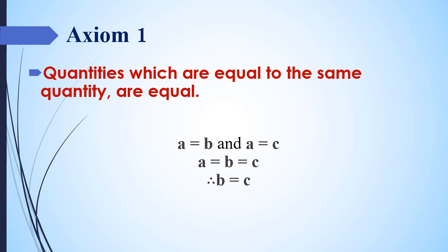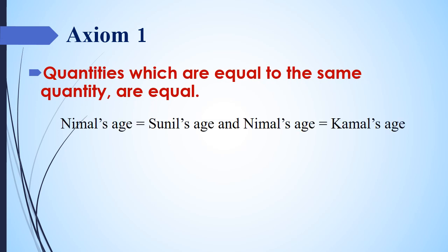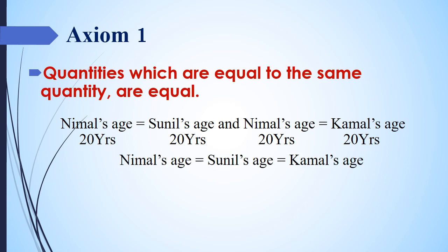Furthermore, this axiom can be explained from a day-to-day example. Nimal's age is equal to Sunil's age, and both Nimal and Kamal are the same age. Imagine Nimal is 20 years old — then Sunil is also 20 years old, and Kamal is also 20 years old. According to axiom number 1, we can conclude all of them are the same age, so Sunil's age should be equal to Kamal's age.